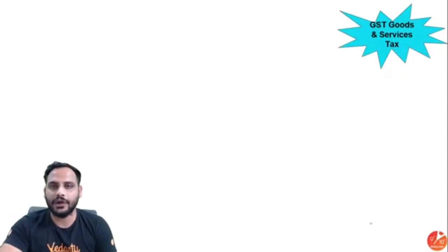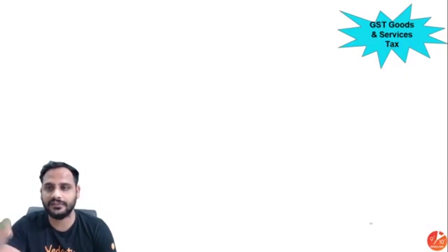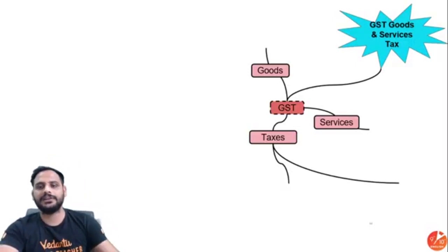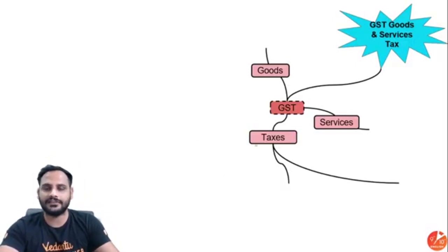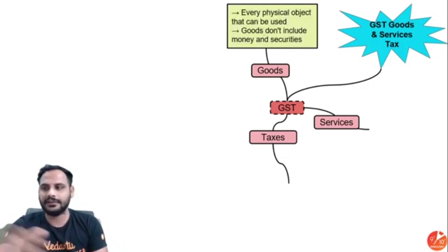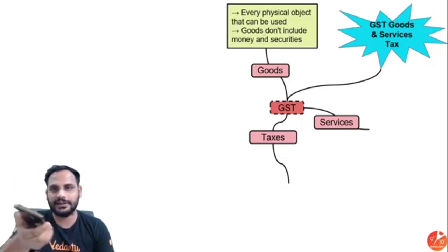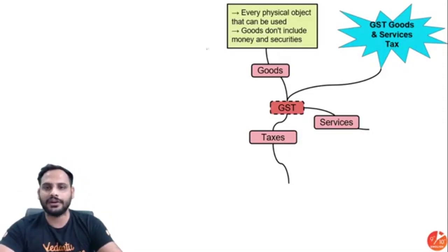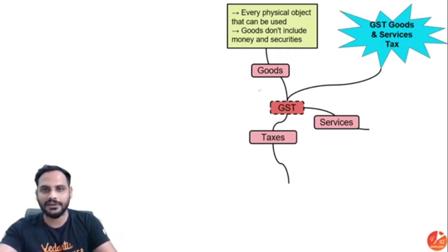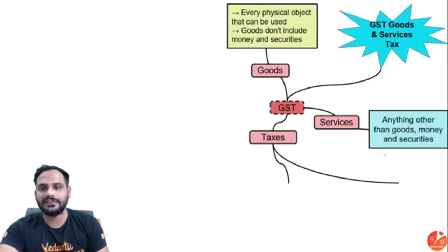Now the first chapter is Goods and Services Tax, that is GST. First, we need to understand what goods, services, and taxes mean. Goods means every physical object that can be used — for example, a water bottle or a milk container. Any physical thing you can touch and use is called goods. Remember, goods does not include money or securities.